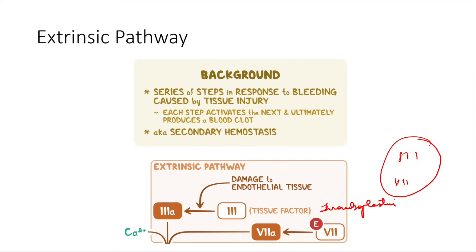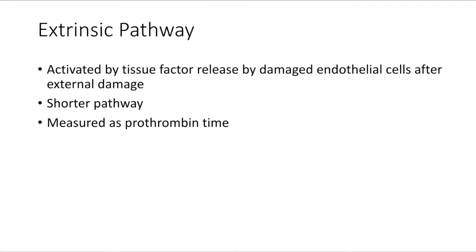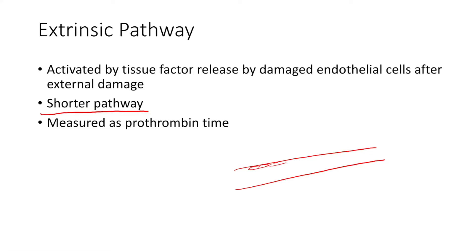The salient features of the extrinsic pathway: it is a shorter pathway, activated by tissue factor released by damaged endothelial cells after external damage. Any external damage causes the endothelial cells to release tissue factor, which starts the cascade. It is measured as prothrombin time, or PT. Remember: PT measures the extrinsic pathway, and APTT measures the intrinsic pathway — very important to know.